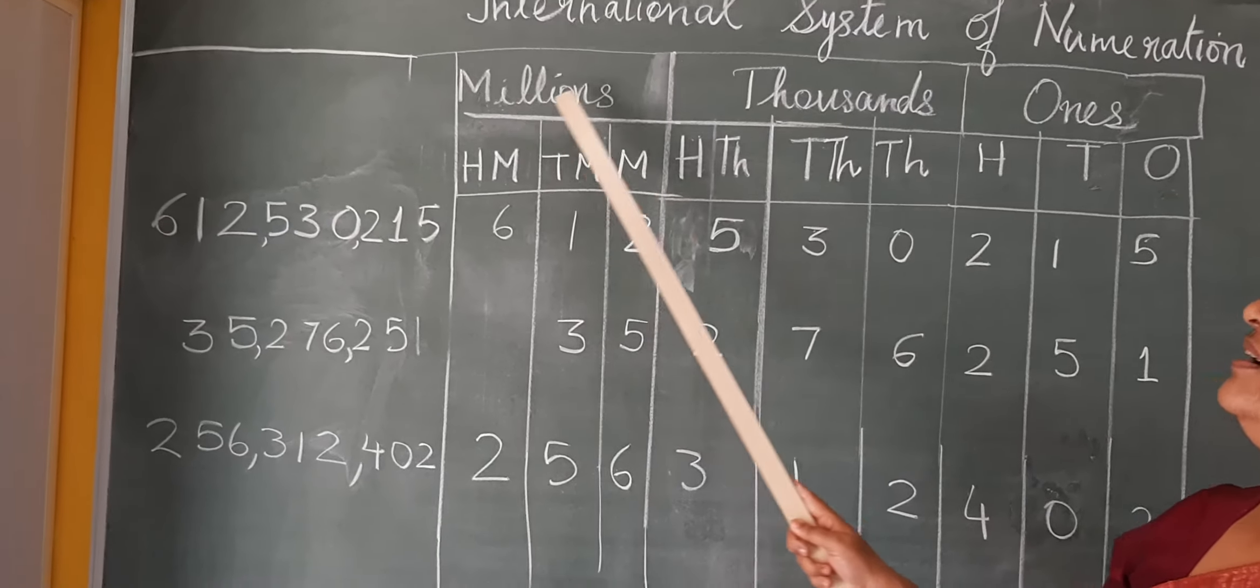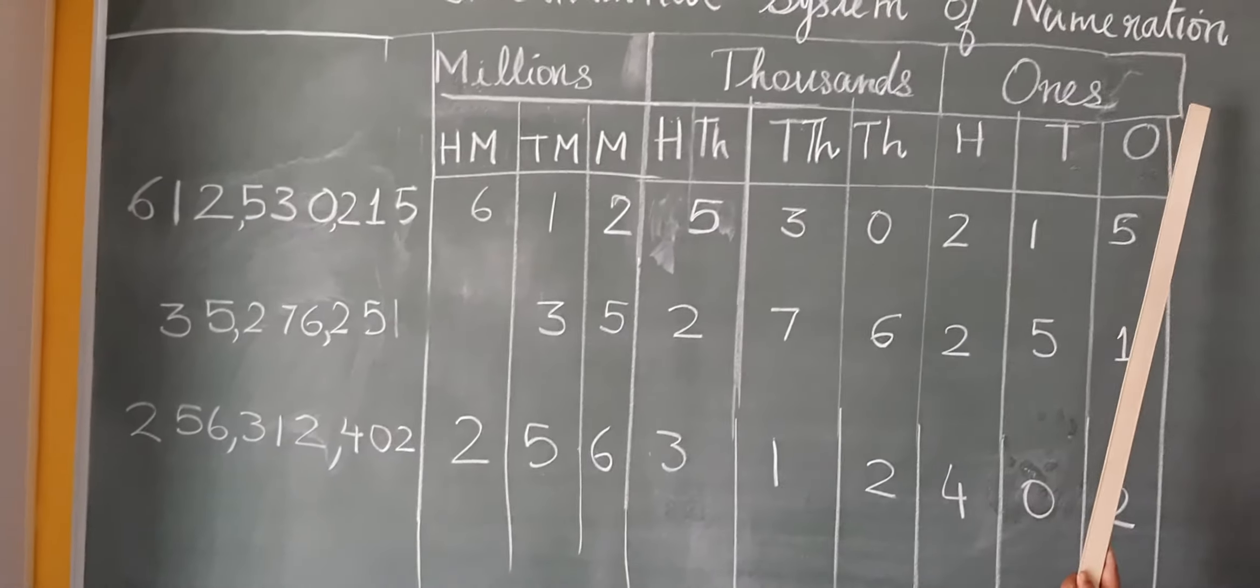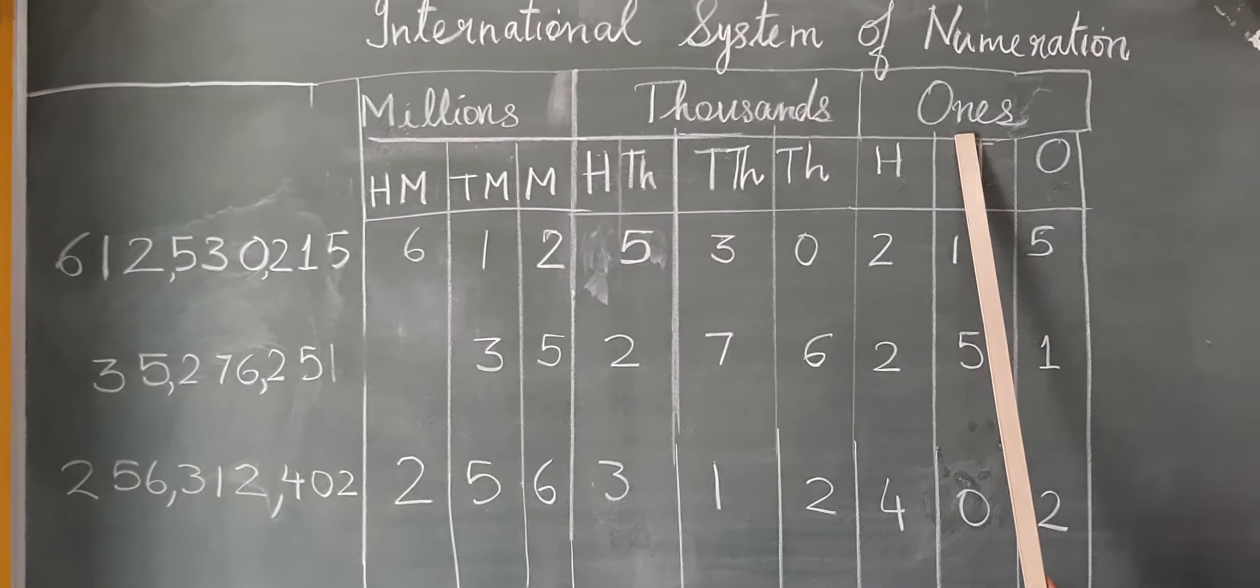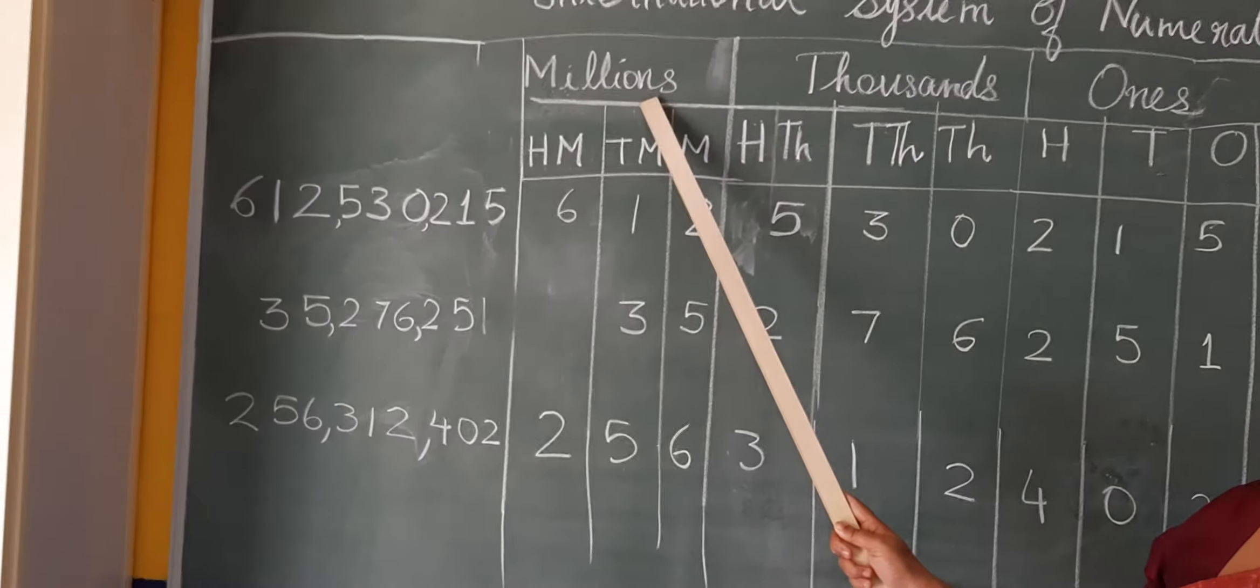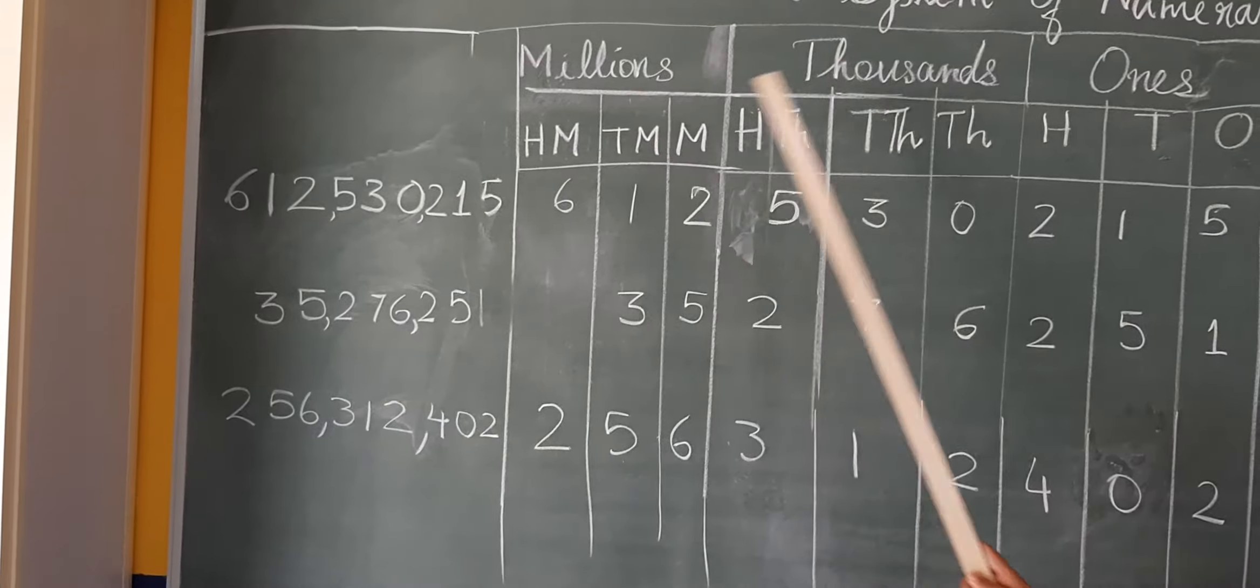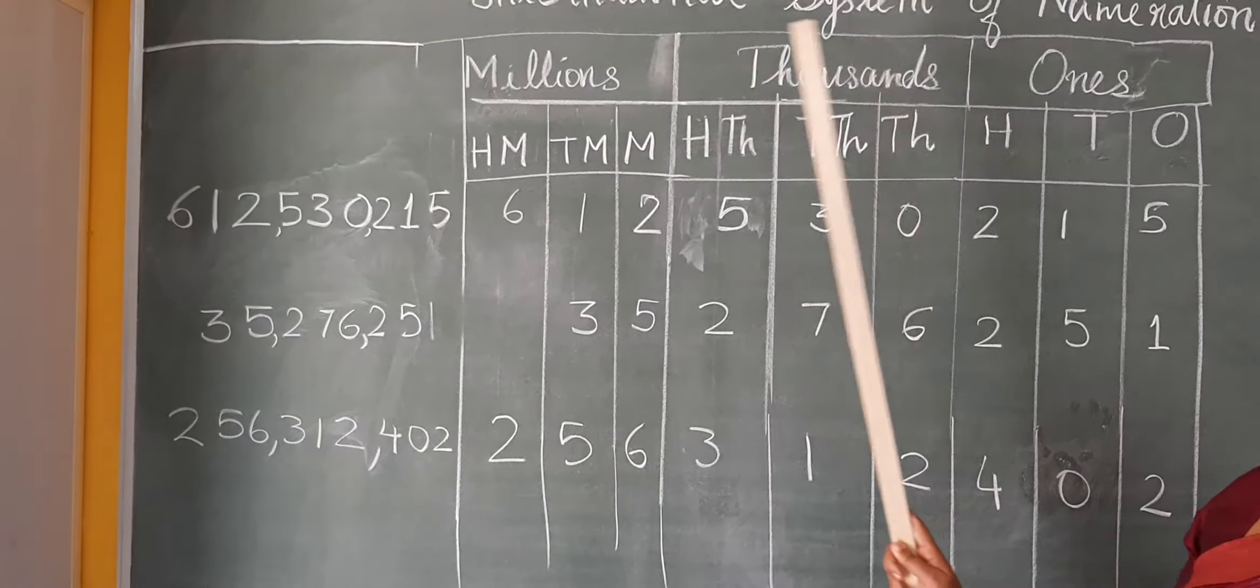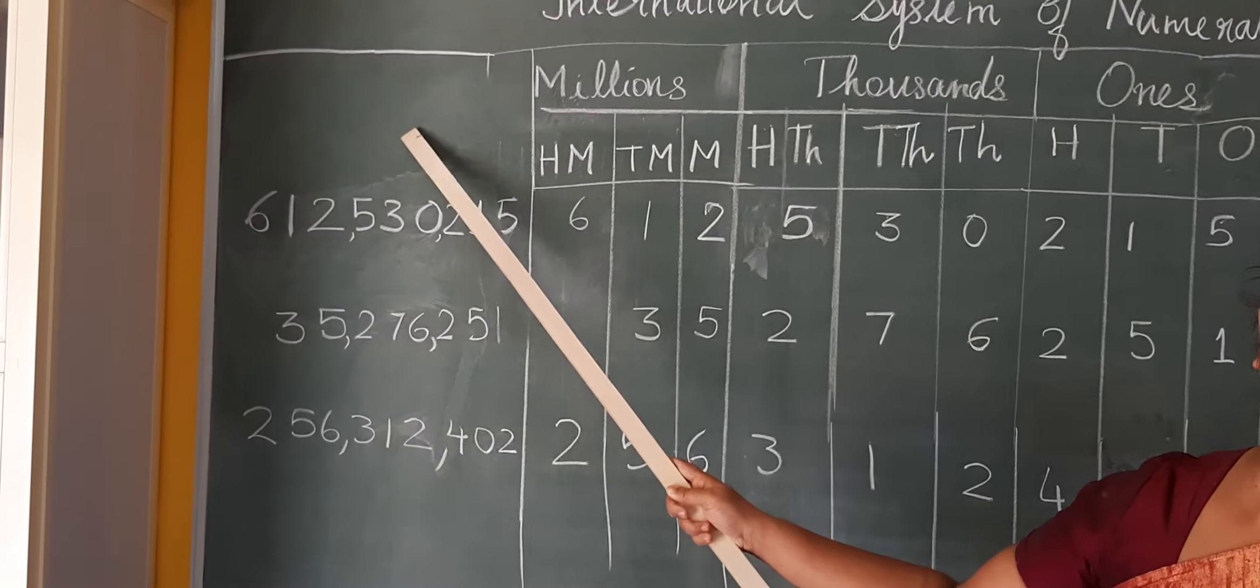Now, what are the periods written here? You see, ones period, thousands period, and millions. This is how it goes: ones, thousands, millions, and then billions.